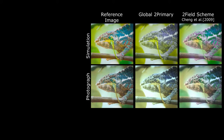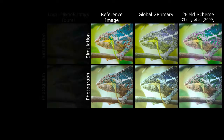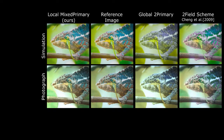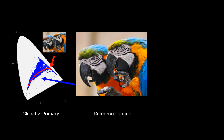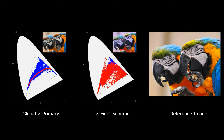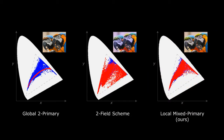Here is another example with both simulation and photographs, and our method has better colors. We also compare the color gamuts. In the global two-primary display, since only two colors are used, all the color points are projected onto the curve, and a lot of greens are missing. The two-field scheme incorrectly adds too much blue to the gamut. Finally, our method more faithfully represents the original color points. We also show the video results.